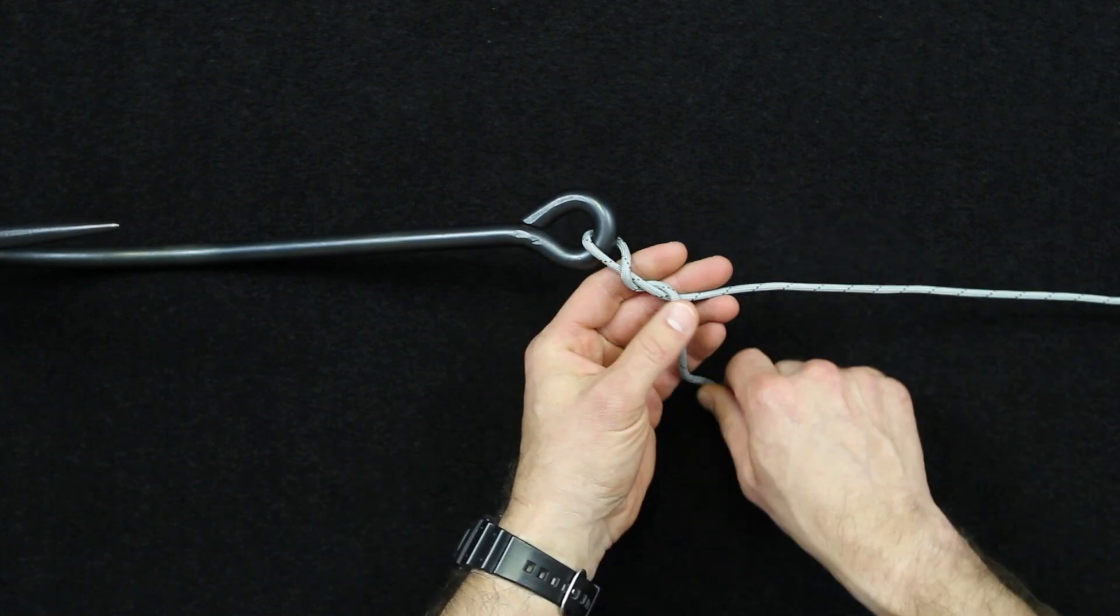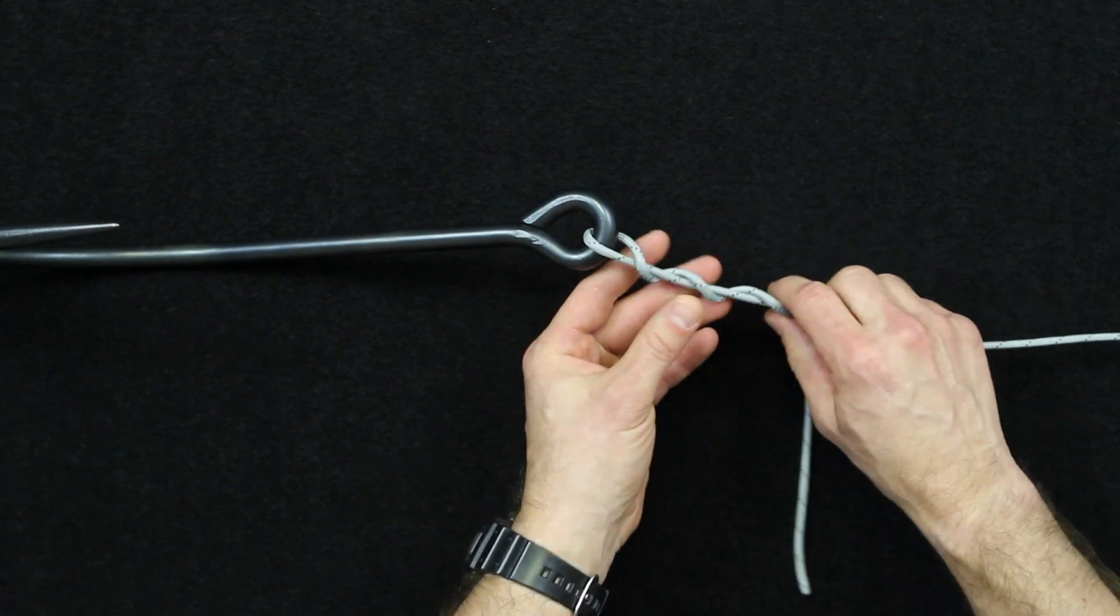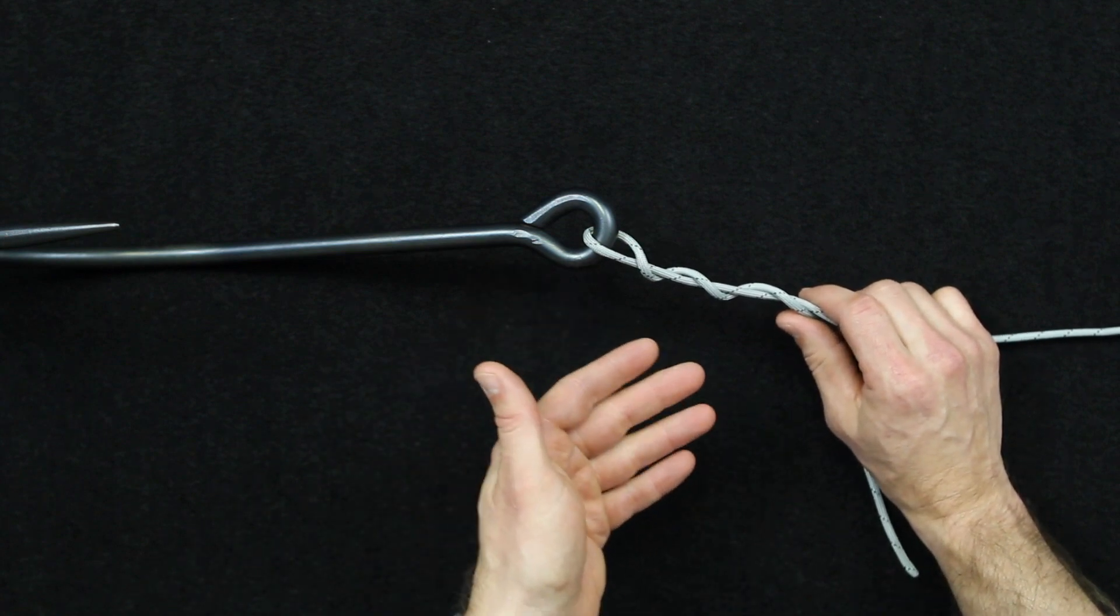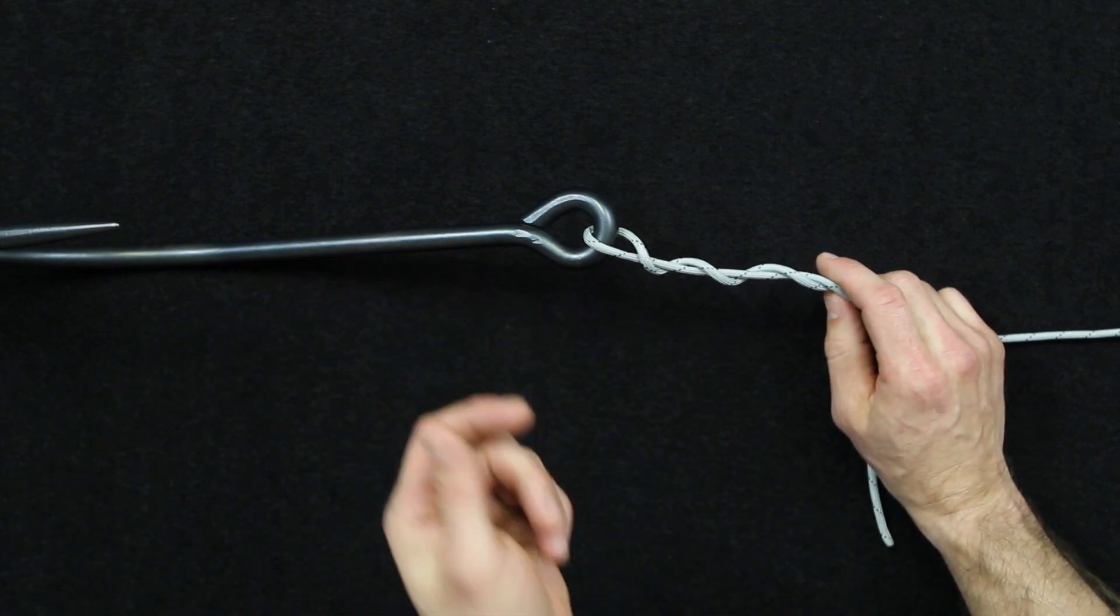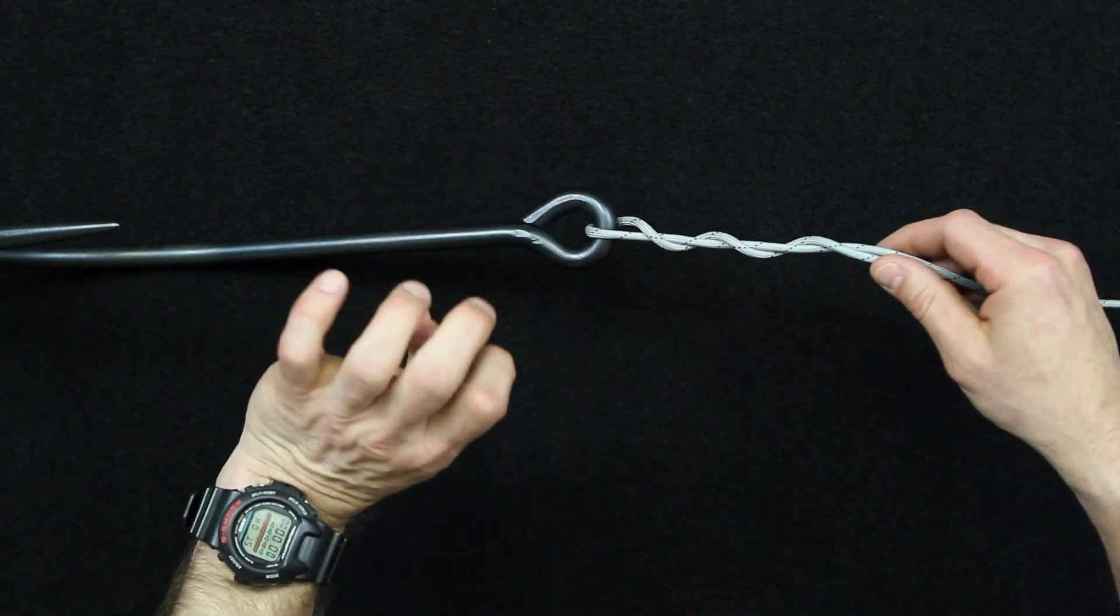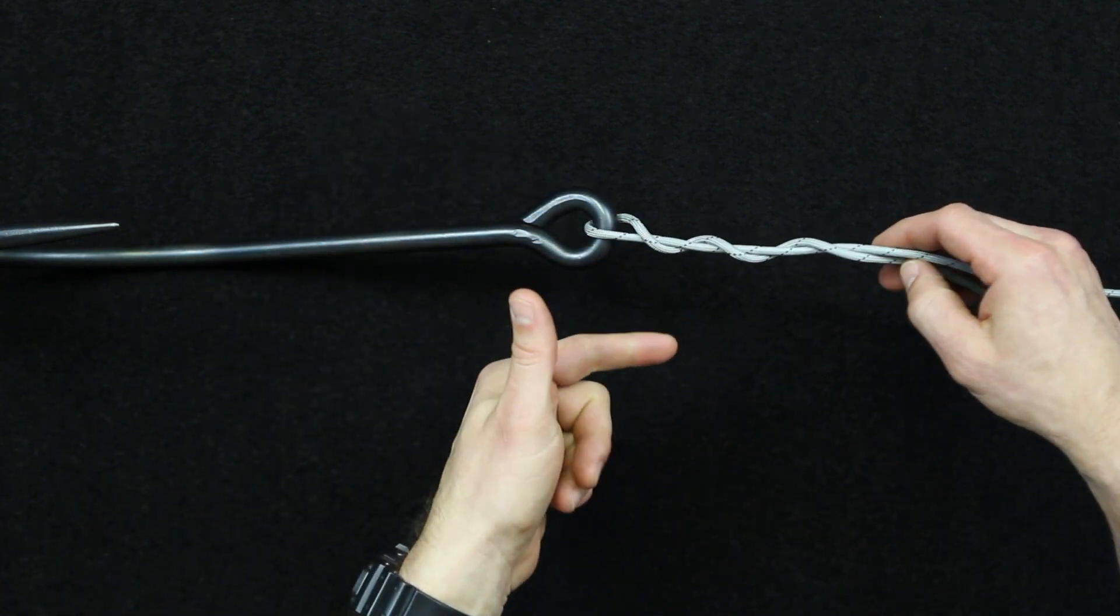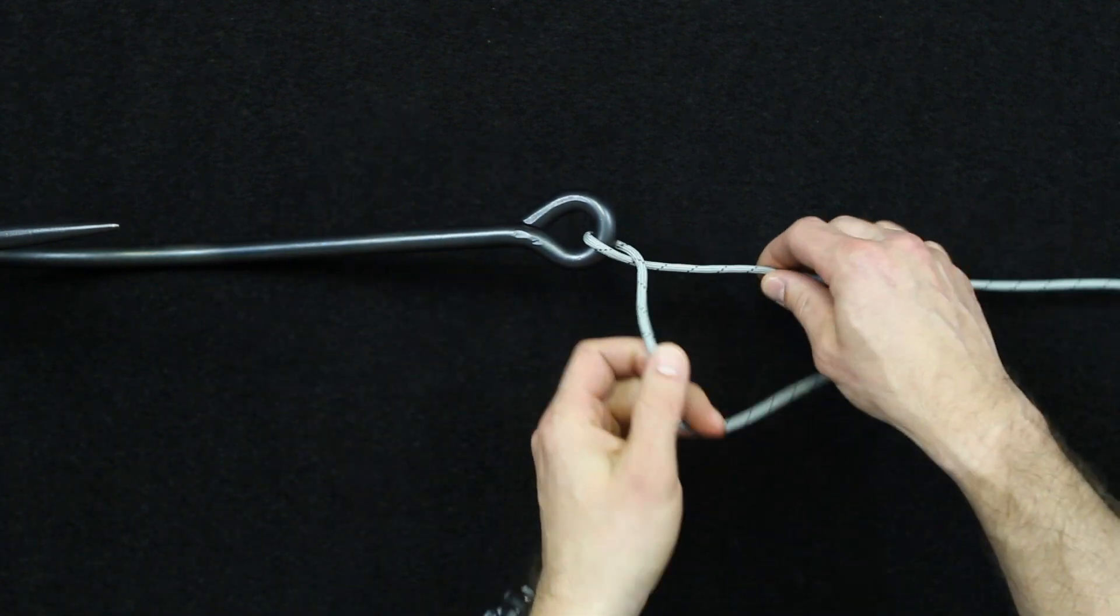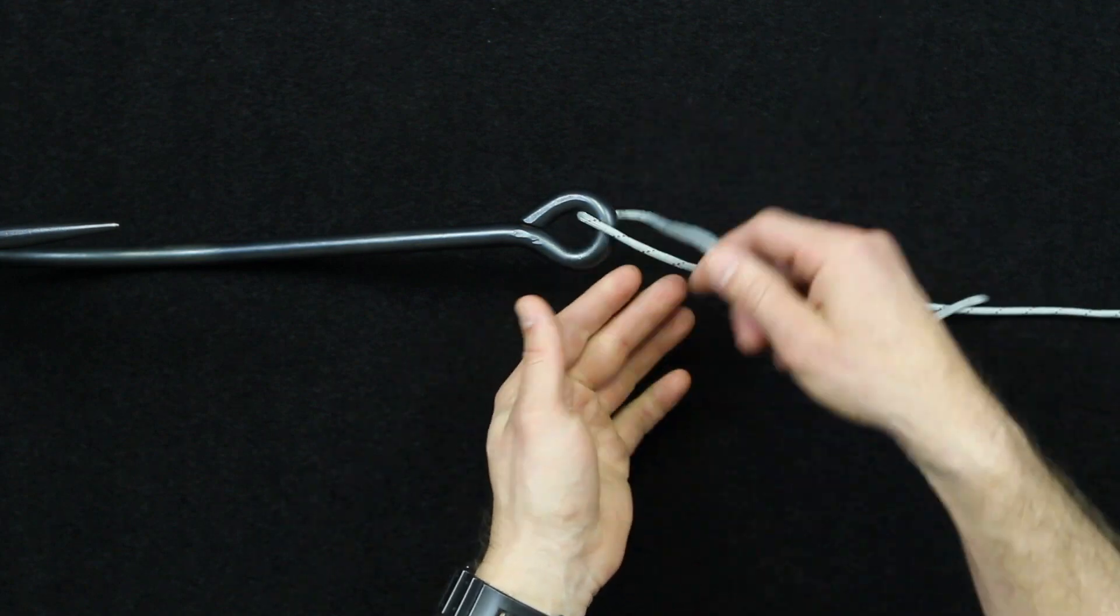A lot of these fishing knots require wrapping and something you can do depending on the size and weight of your hook and how much weight is on the line, you can actually take the hook and spin it to get these wraps too. But for the sake of this demonstration I'll just manually wrap this.